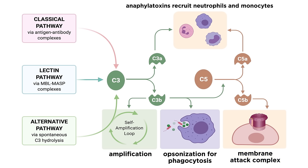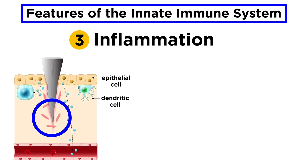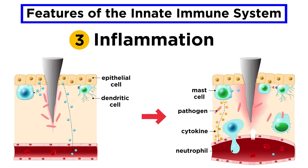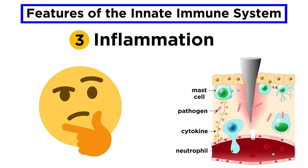Once the initial signs of barrier breach and infection begin to manifest, the affected area enters a state of inflammation. We will learn how to recognize the four signs of inflammation, which include heat, redness, swelling, and pain, as we gain an understanding of what is transpiring on the cellular and molecular level when this happens. Although inflammation gets a bad rap sometimes, we'll learn how important and effective this process is for quickly containing and neutralizing a threat.